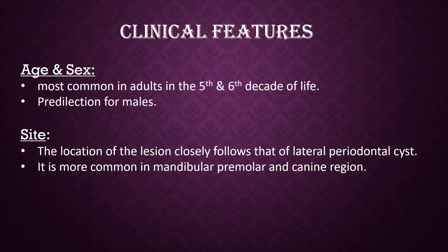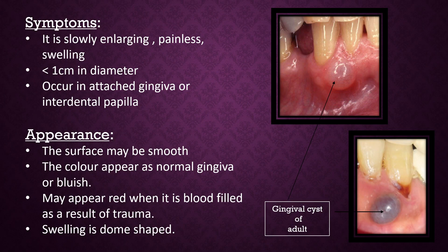Site — the location of the lesion closely follows that of the lateral periodontal cyst. It is more common in the mandibular premolar and canine region. Symptoms — it is a slowly enlarging painless swelling less than 1 cm in diameter. It occurs in the attached gingiva or the interdental papilla.